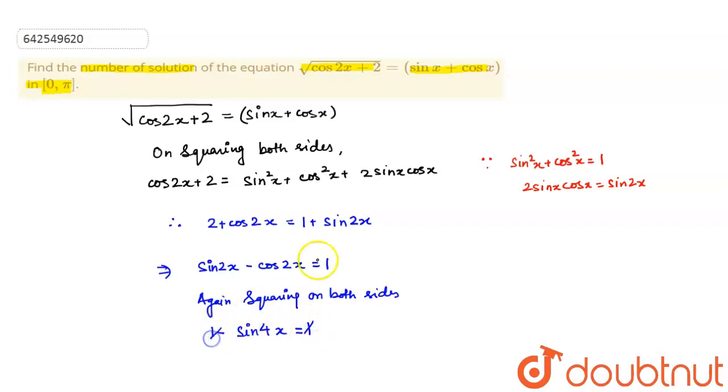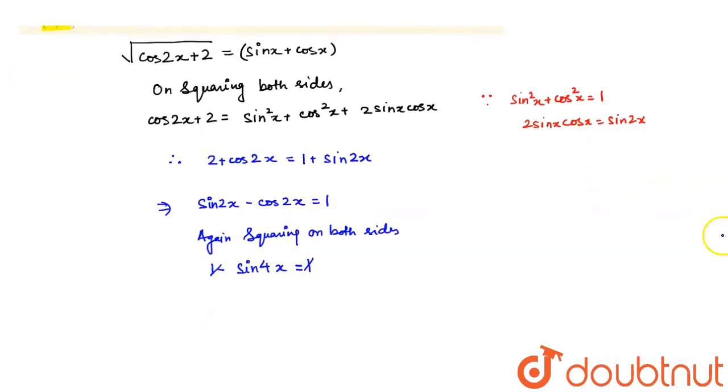So, 1 and 1 will get cancelled out. And, therefore, sin 4x would be equal to 0. Correct?